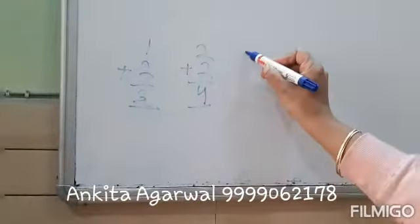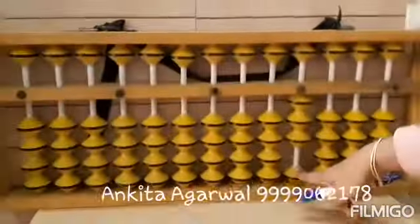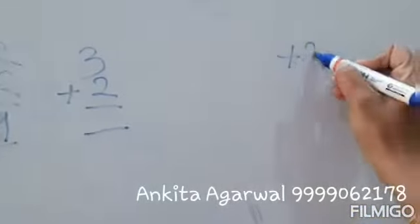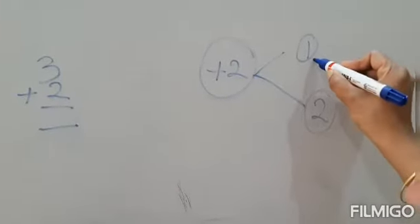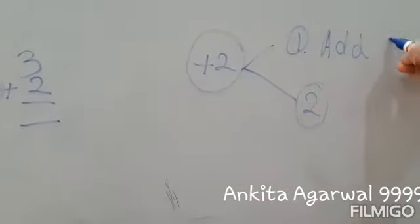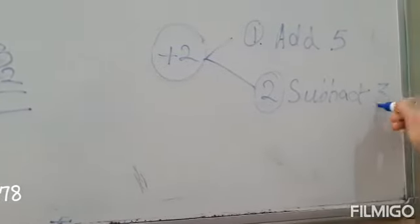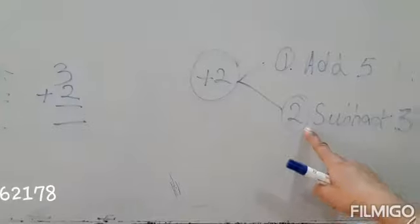Now the next question is 3 plus 2. I have 3 beads here and I want to add 2. But I cannot move 2 beads directly up because only 1 bead is left. So we will follow 2 steps. If I want to add 2 and 2 beads are not available, the first step is the same as we did in plus 1: we will add 5. But now instead of subtracting 4, I will subtract 3.